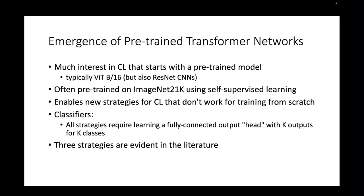Starting from a strong pre-trained network opens opportunities for continual learning strategies that won't work when training models from scratch. I'll be focusing on classification, and regardless of strategy, all require a fully connected output head with K outputs for K total classes after all tasks to date. The work in this area over the last year or so I categorize into three different strategies.